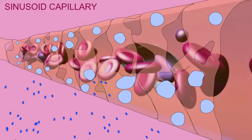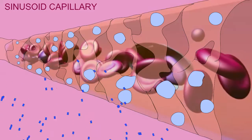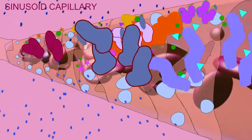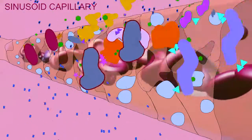This allows larger molecules, including proteins and even cells, to be able to pass across the endothelial cell lining.